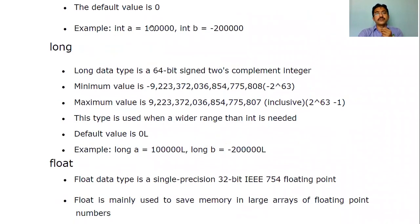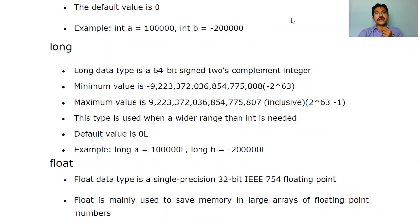Next data type is long — it is eight bytes, which is 64 bits, a signed two's complement integer. The range is -2^63 to 2^63 - 1. The default value is 0L, where L stands for long.